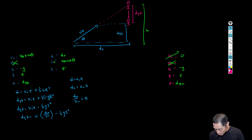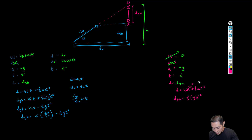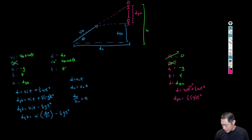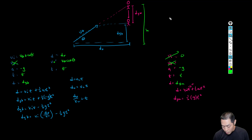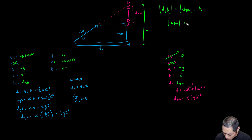For the monkey, using the same equation with VI = 0: DY_M = −½·G·T². Now I need another relationship. Notice that the bullet's vertical displacement DY_B plus the monkey's drop DY_M equals the total height H. So geometrically: |DY_B| + |DY_M| = H, which rearranges to |DY_M| = H − DY_B.